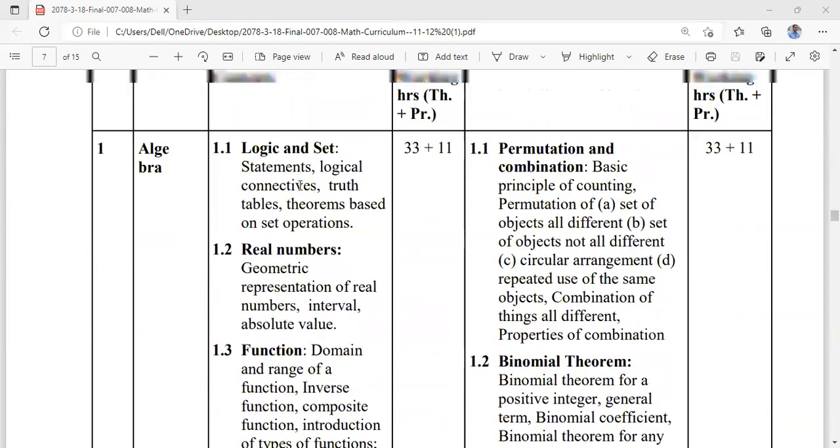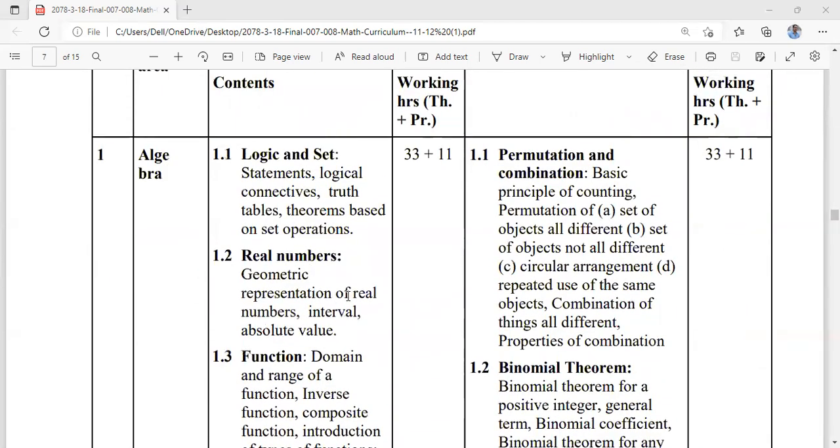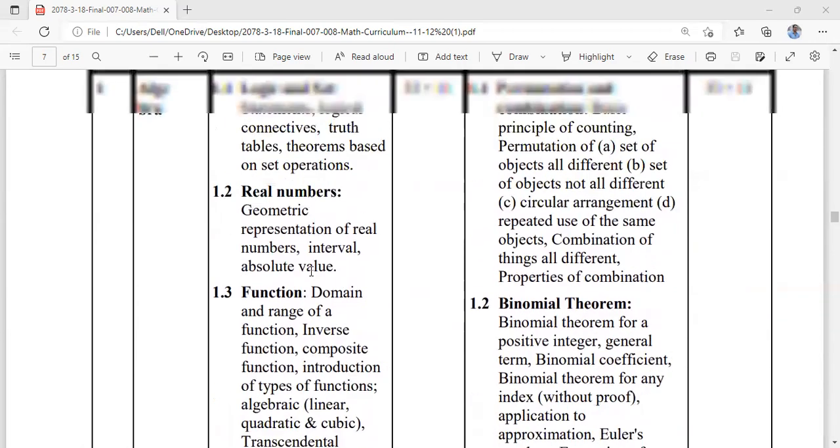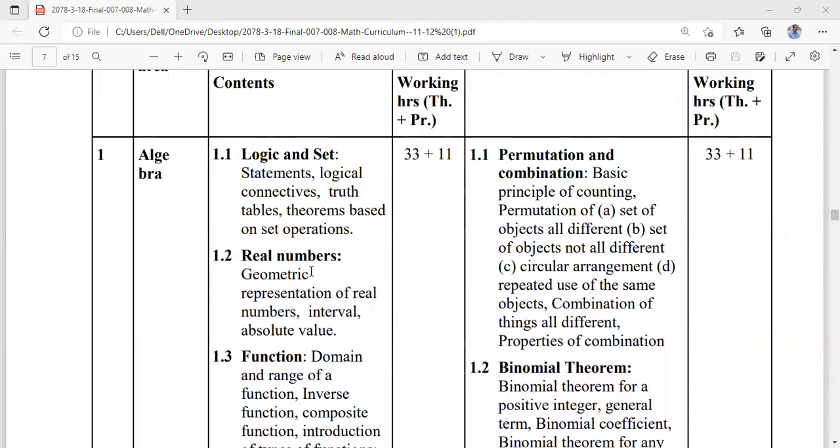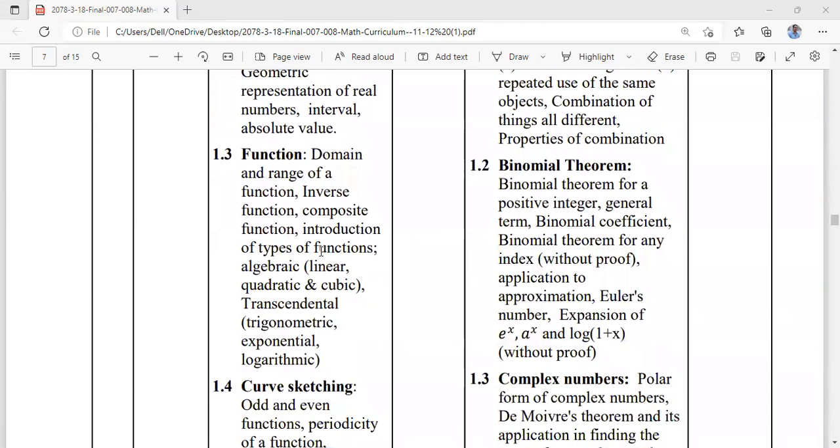In the real number system, there is geometric representation of real numbers, intervals and absolute values. In functions, you can see Cartesian product. We have domain range of function, inverse of function, composite of function.